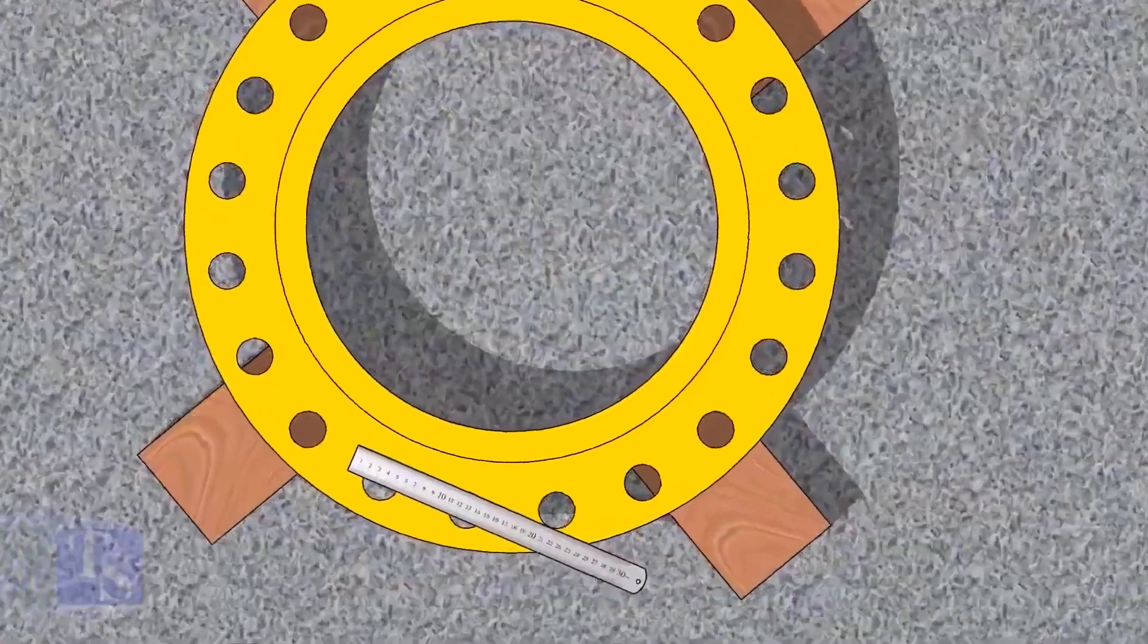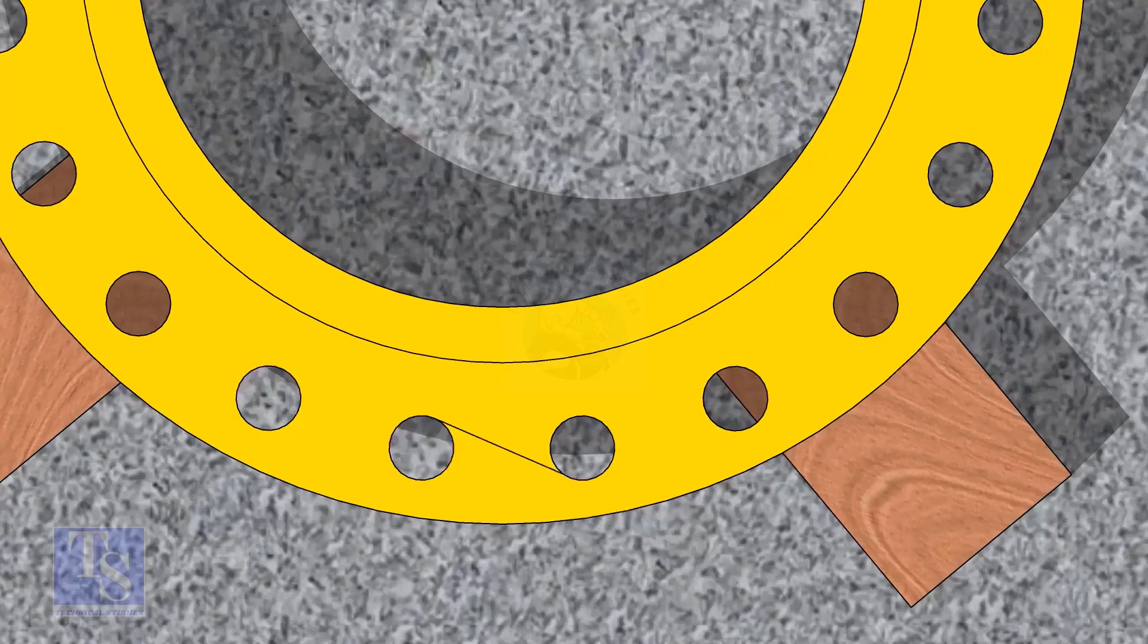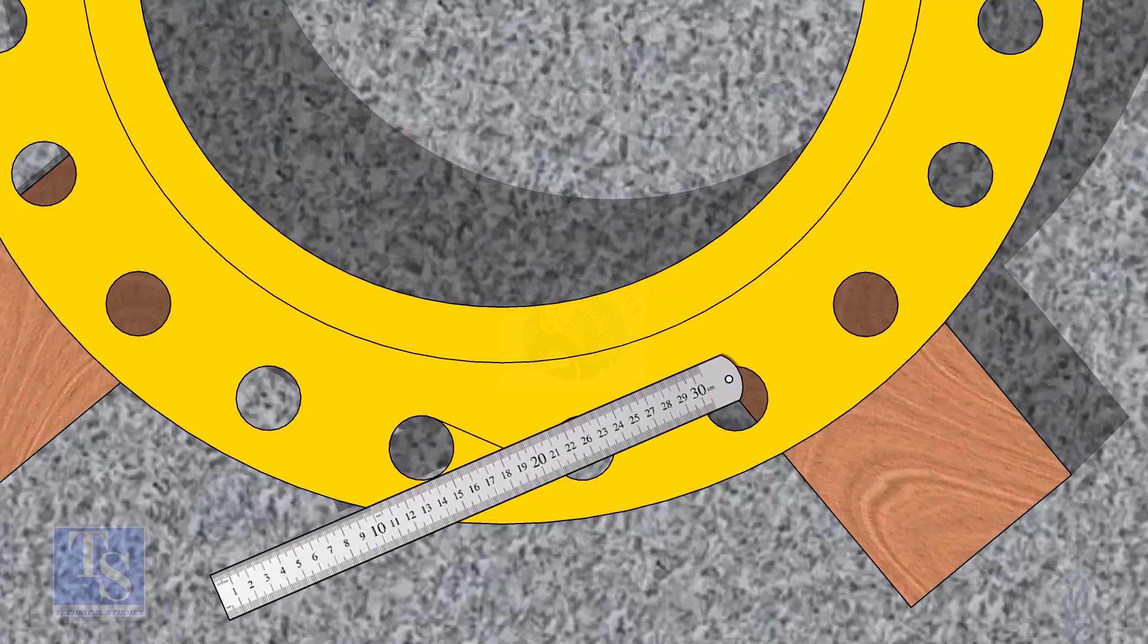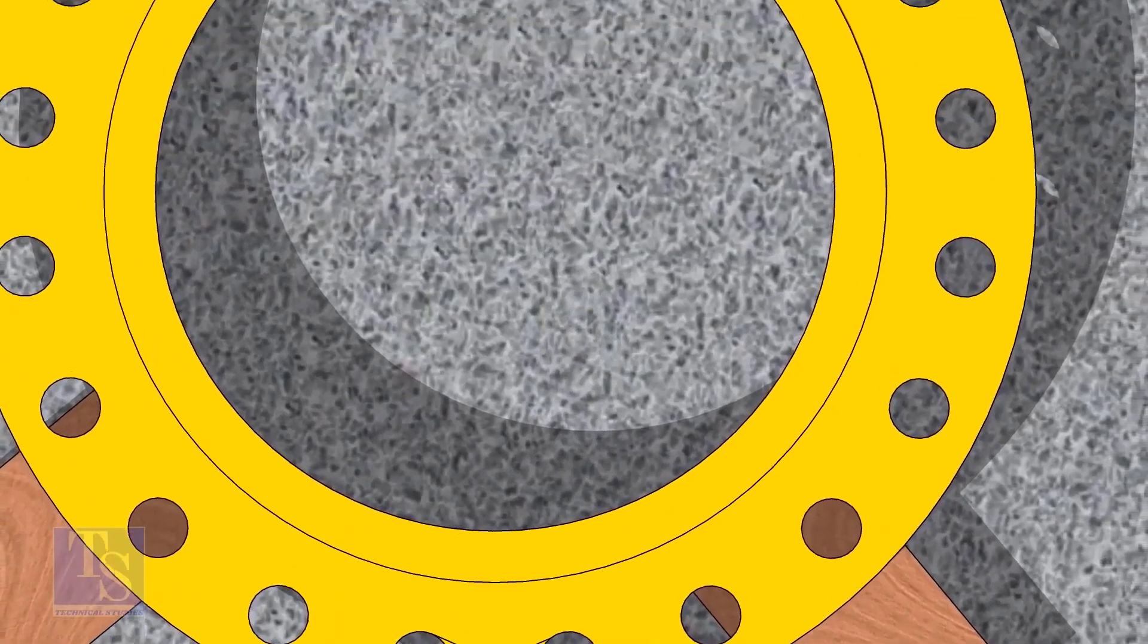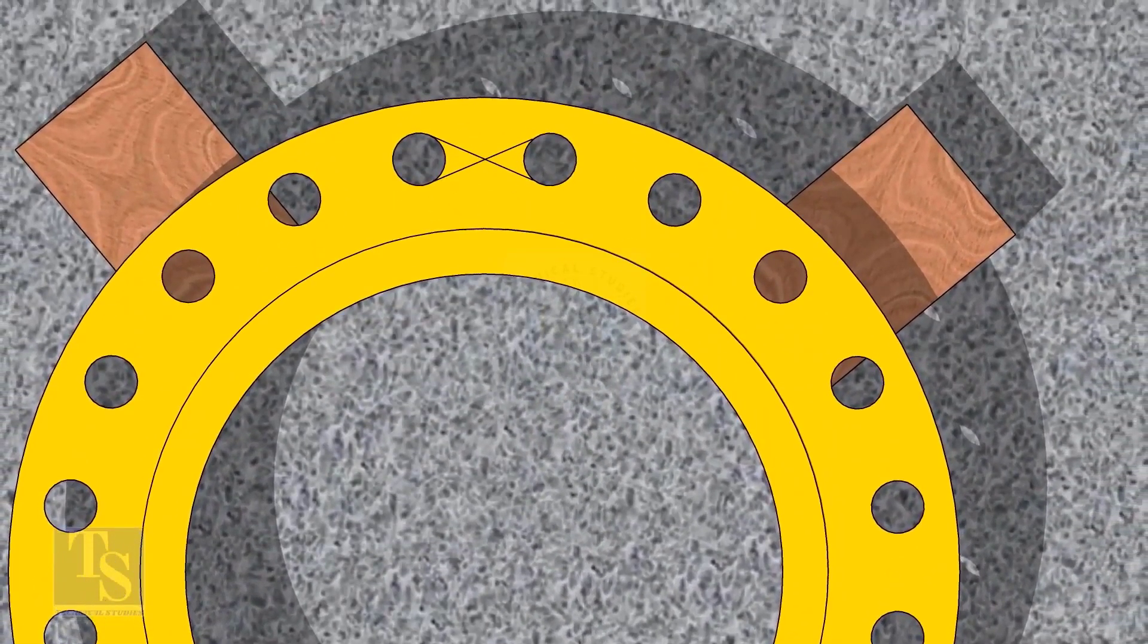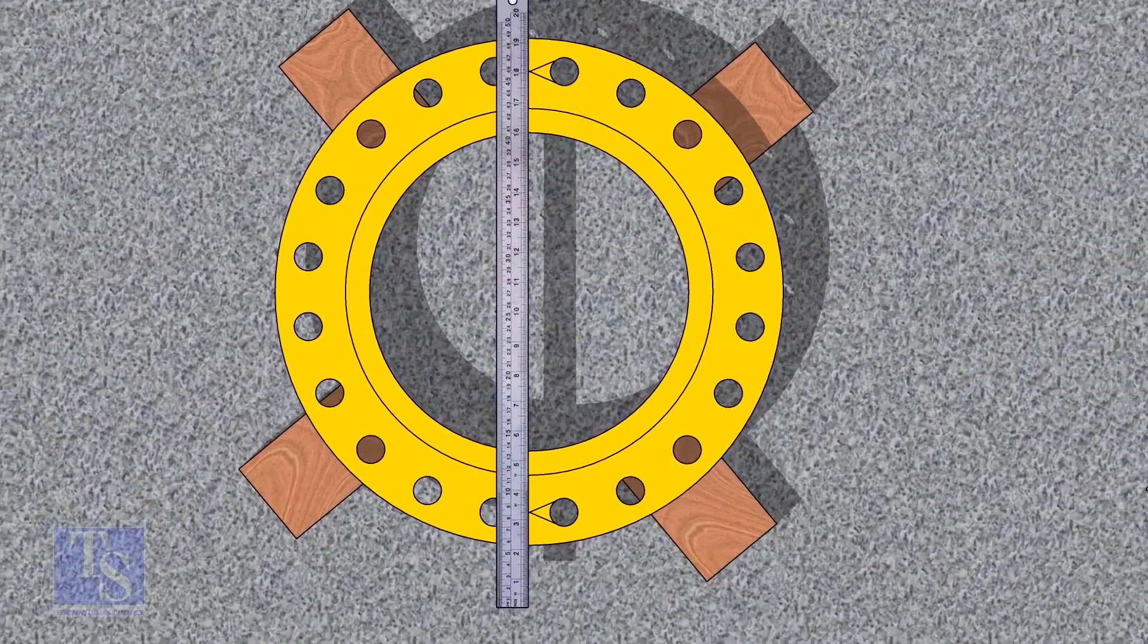Let us mark the center line of the flange. Draw tangential lines of two adjacent holes. The intersection of the lines is the center of these holes. Draw the center of the two holes on the opposite side. Draw the center line of the flange as shown.